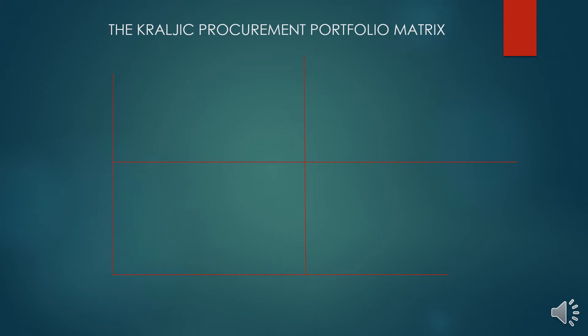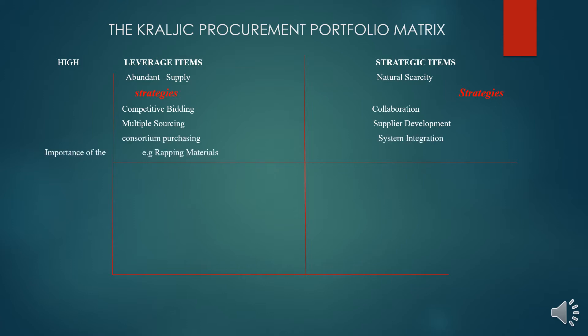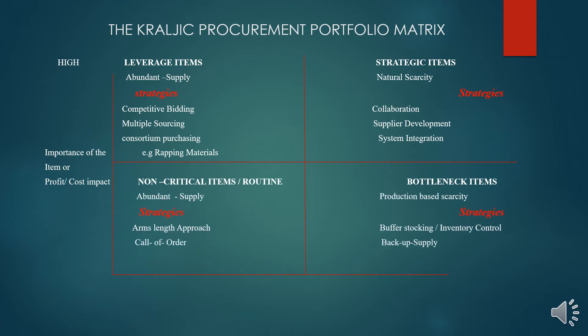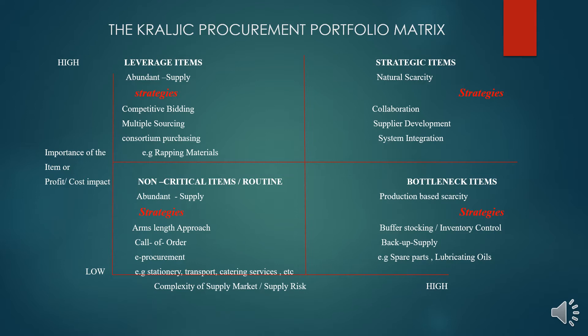The Kraljic procurement portfolio matrix is made up of four quadrants, each containing different items found in any organization. For our case, we'll be using an example of a fruit juice company. These items are measured against how easy or hard it is to source them from the market — the complexity of the supply market or supply risk — on the y-axis, against the importance or profit impact to the organization on the x-axis.